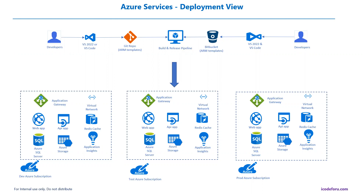Back to the deployment view — this is a very high-level picture of how the deployment structure looks like for the Azure cloud services I'm going to provision. These are all going to be in different subscriptions. For example, I'm maintaining a separate subscription for development, a separate one for test, a separate one for production, and if you also have a POC, that goes in a separate subscription as well, so we are not interfering with other environments when multiple projects are running.